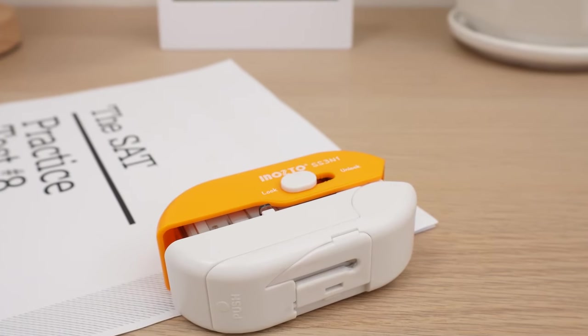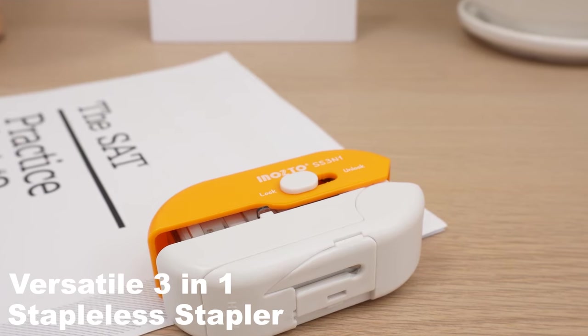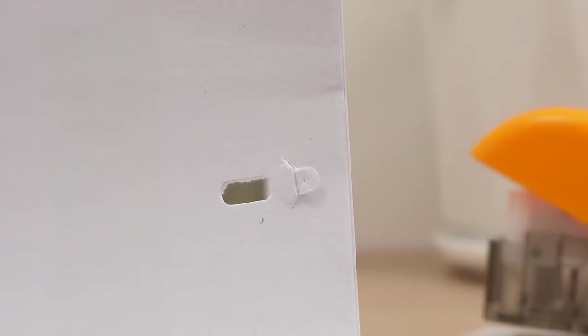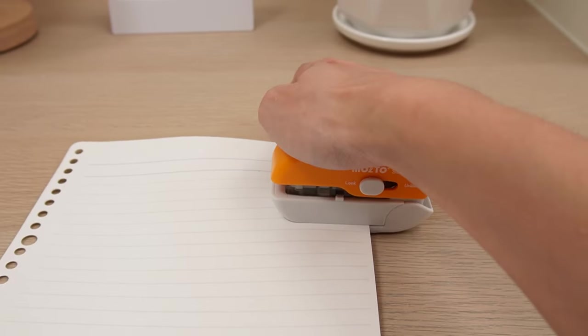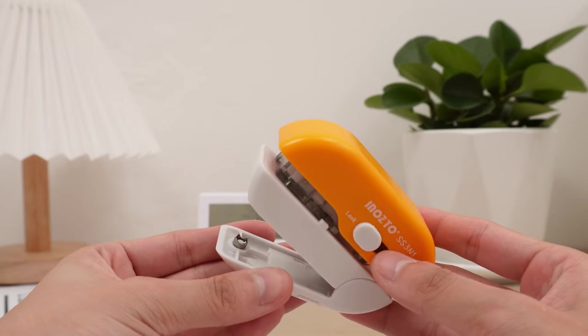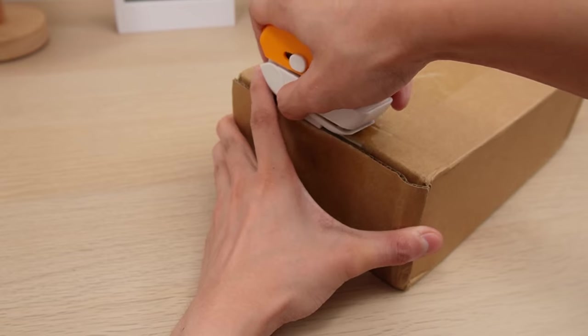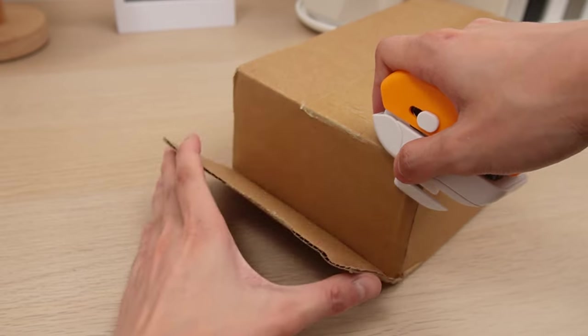Now, the Versatile 3-in-1 Stapleless Stapler, a handy office tool. Its transparent casing ensures precise stapling, and the hole puncher effortlessly pierces multiple layers of paper, making office tasks a breeze. Plus, it features an envelope opener at the bottom, reducing the need for extra tools.